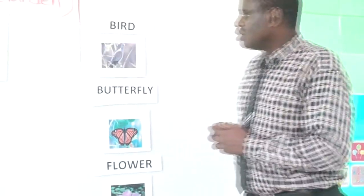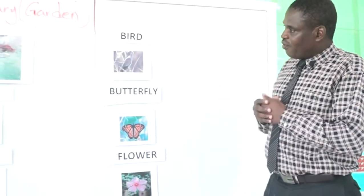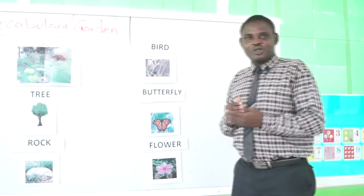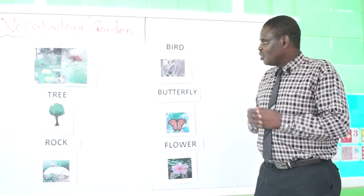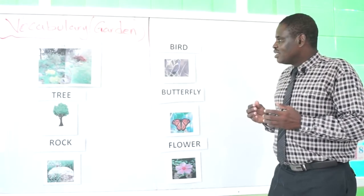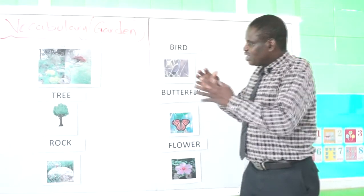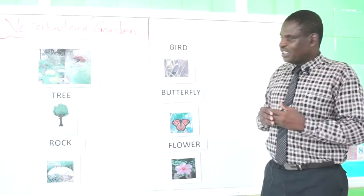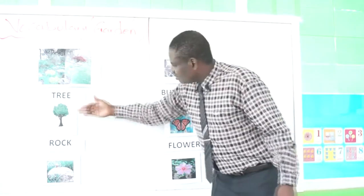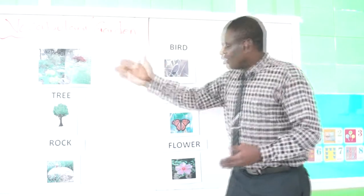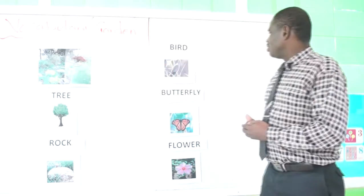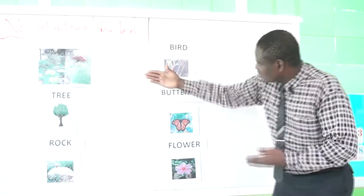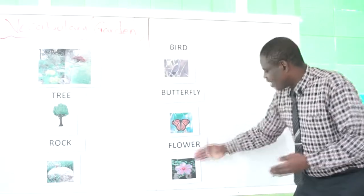If I have to go over again, the garden is a piece of land or a space where things can be found. Part of these things that can be found, we have selected five of them to talk about: we have the tree, we have the rock, we have bird, we have butterfly, we have flower.